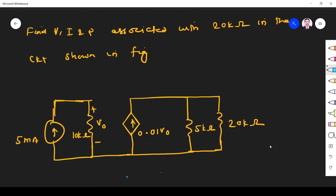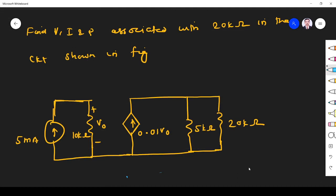Find voltage, current and power associated with 20 kilo ohm in the circuit shown in figure. So I have to find what is I value. What is V here? What is P here?